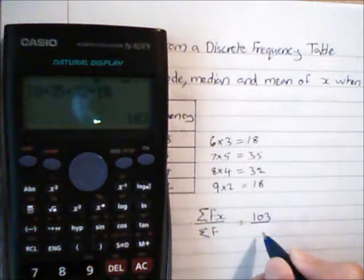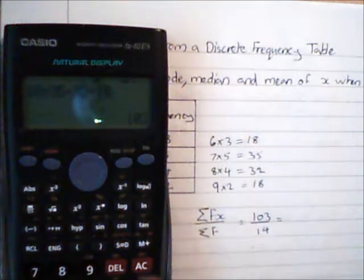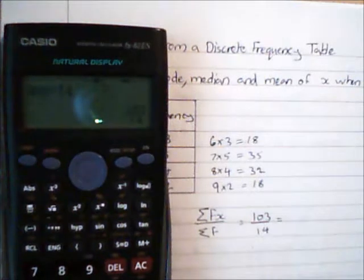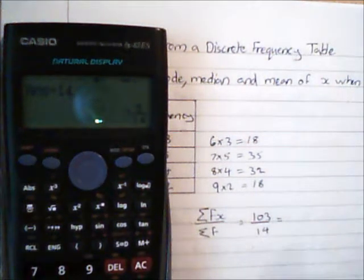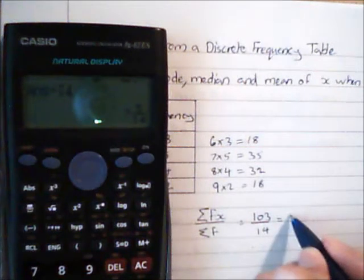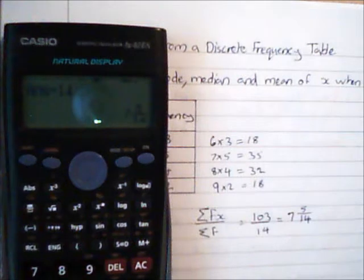I'm dividing it by the total frequency which was 14, and I've got my answer here. I'm going to use a mixed number, so I've got seven and five fourteenths as an answer for the mean.